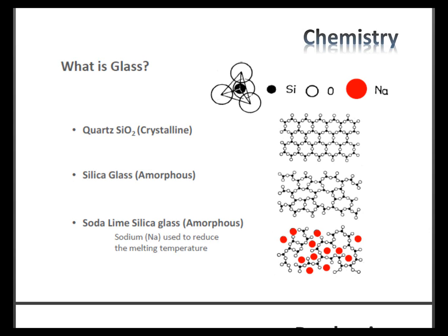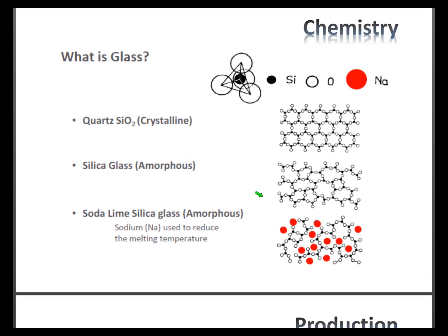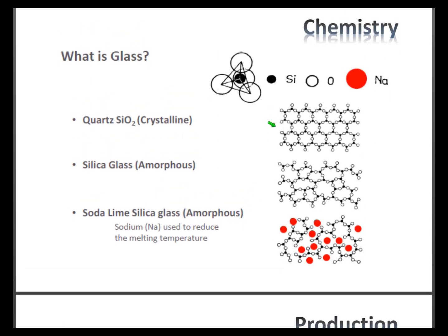My background is as a structural engineer — not a chemical engineer or fracture mechanics specialist — and I'm approaching this presentation from that standpoint. As shown in this slide, a purely crystalline material has a very regular structure. When we get into silica glass, it becomes more amorphous. With soda-lime glass, inserting sodium lowers the melting point further.